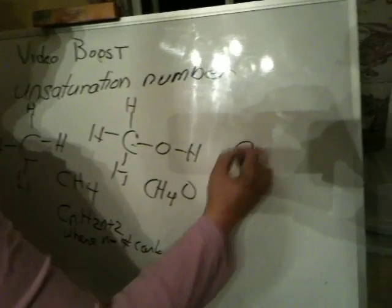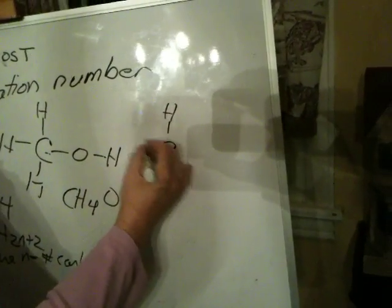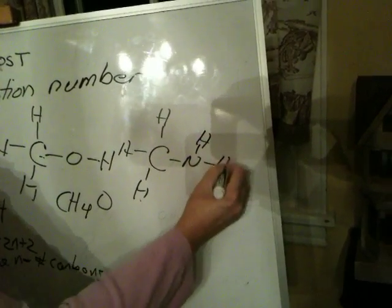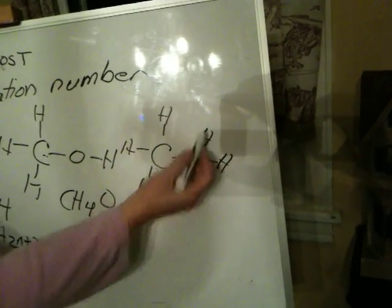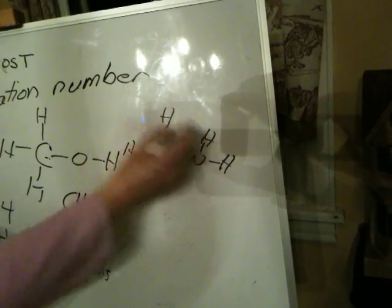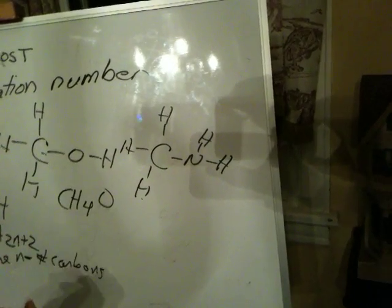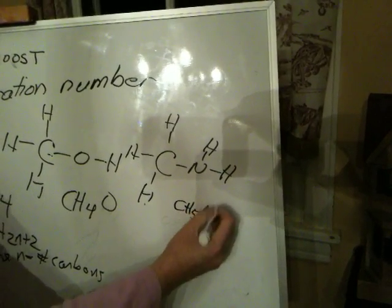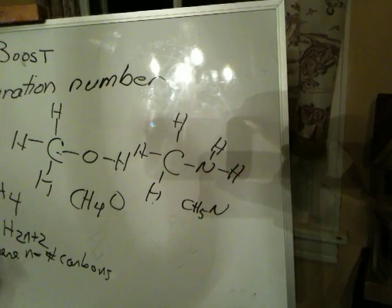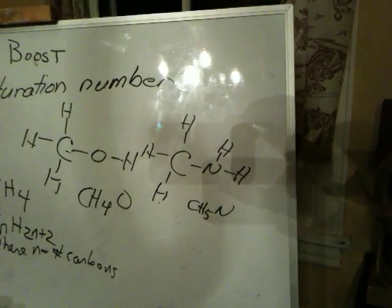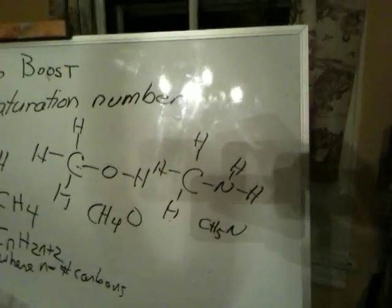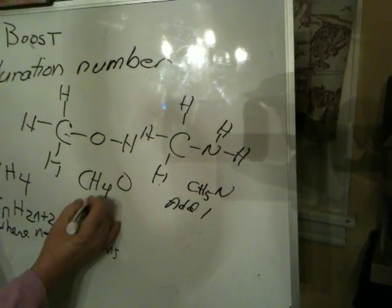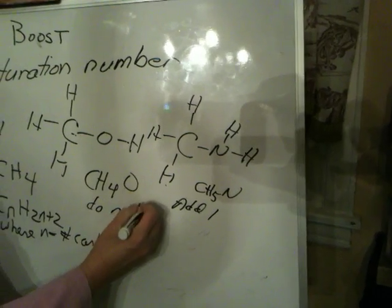Now consider what happens when you add a nitrogen — it's a whole different ball game. If you add a nitrogen, there's an extra slot for a hydrogen. So the saturated formula for this methane derivative is CH5N. What does this teach you? It teaches you that you have to add one H for every N in your formula into your saturated formula. So: nitrogen — add one; oxygen — do nothing.